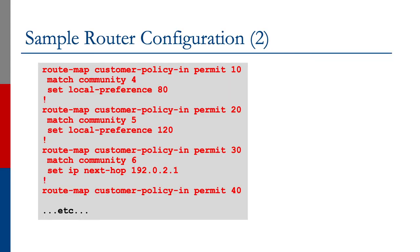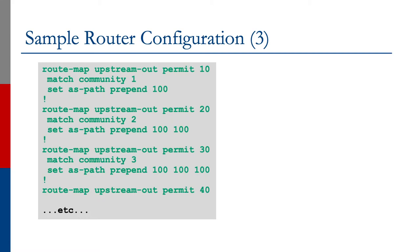Looking at the customer policy on the inbound direction: the first statement, permit 10, matches community list 4 — which matches 100:80 — and sets the local preference to 80. The next statement matches community list 5 and sets the local preference to 120. The next one matches community list 6, sets the IP next-hop to 192.0.2.1, and since we've already told the router to reach that address via null 0, it continues matching these different communities and does exactly what we expect.